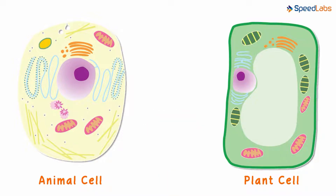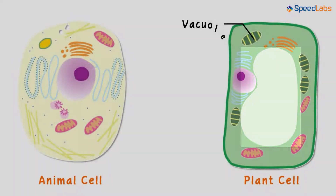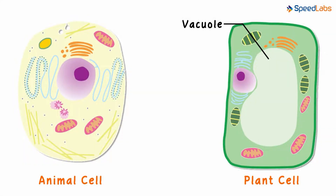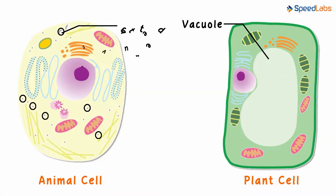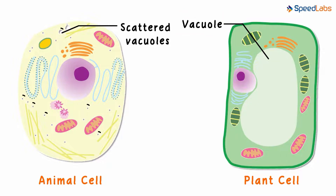In the plant cell, there is a large empty structure called the vacuole. In the animal cell, there are several smaller ones scattered all over the cytoplasm. The plant cell has one single vacuole while the animal cell has several smaller ones.